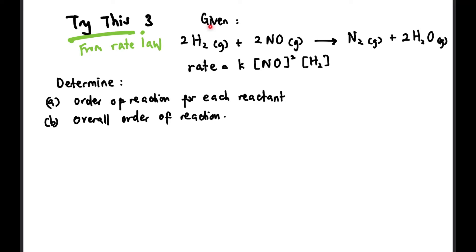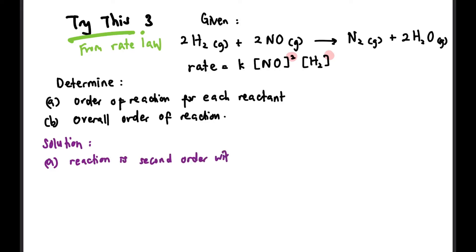So let's start with this equation. Given this equation here, they give rate equals to K times concentration of NO squared times concentration of H2. So, to get the order of reaction for each reactant, we just look at each of their powers in the rate law. So we know that the reaction is second order with respect to NO and it is first order with respect to H2 — we look at the powers.